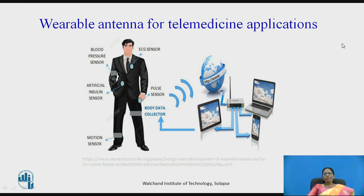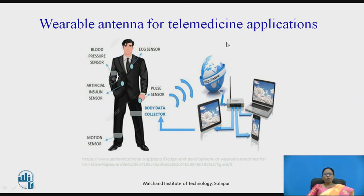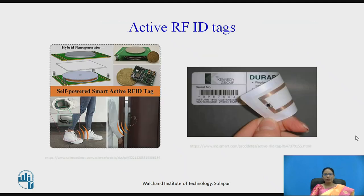Another application is telemedicine. A person can wear sensors for blood pressure, artificial insulin, motion, pulse, and ECG. All this body data is collected and sent over the internet, making it available to a doctor who can then send prescriptions or precautions to the patient's mobile or laptop — all made possible using wearable antennas.